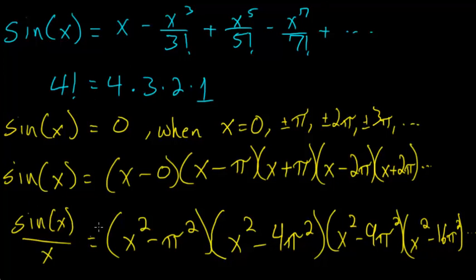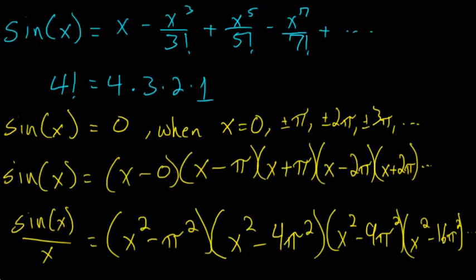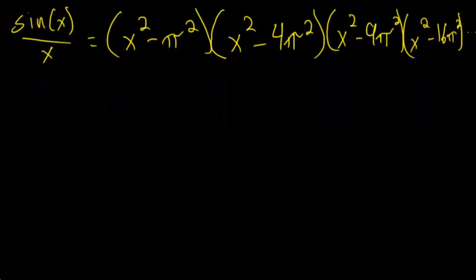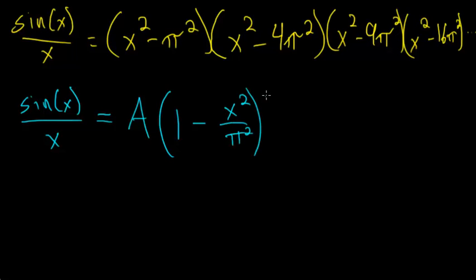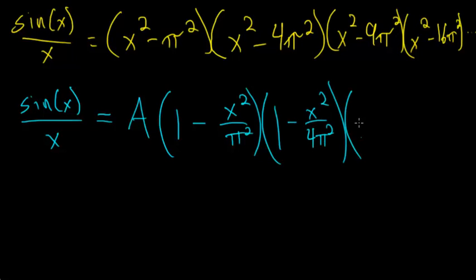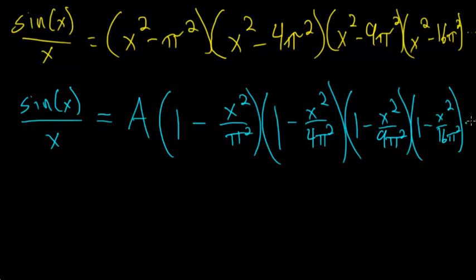The next step is to factor sine(x)/x into a slightly different form. We can rewrite it as: sine(x)/x = A · (1 − x²/π²) · (1 − x²/4π²) · (1 − x²/9π²) · (1 − x²/16π²) · … where A is a constant we'll determine.